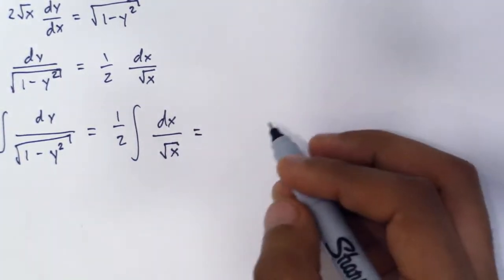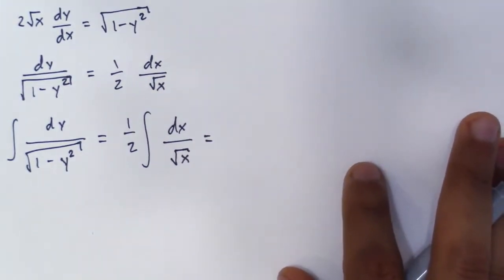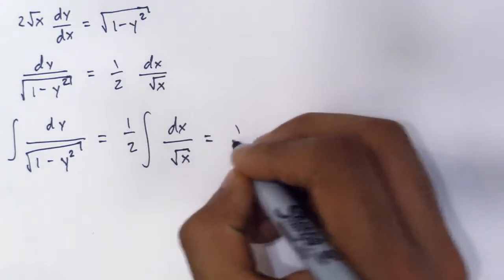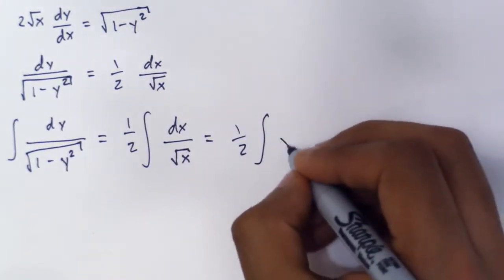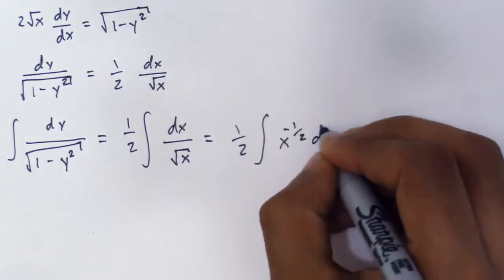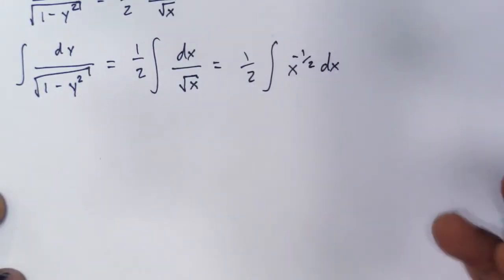Now this could be rewritten, which I like rewriting it this way so it's easier to integrate. It's 1 half the integral x to the negative 1 half dx, and from there you could write the general solution.